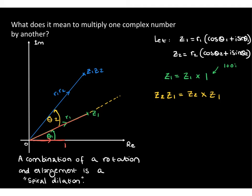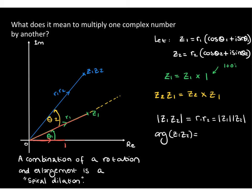The modulus of z1z2 — the product of z1 and z2 — is equal to r1·r2, which is the product of the individual moduli of z1 and z2. And the argument of the product z1z2 is θ1 + θ2, which is the argument of z1 plus the argument of z2.